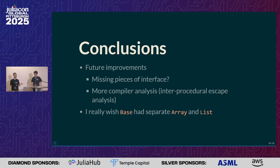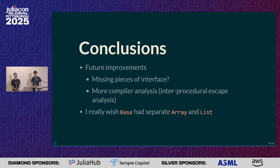Just as a personal note, I for a long time have wished that Julia had a separate array type that was a multidimensional fixed-sized collection, and a list type, which would be a single-dimensional growable collection. We obviously can't change this in Julia 1.0, and we probably can't change this in Julia 2.0 — it would be way too breaking even if we ever made a 2.0, because people, it turns out, like using arrays.